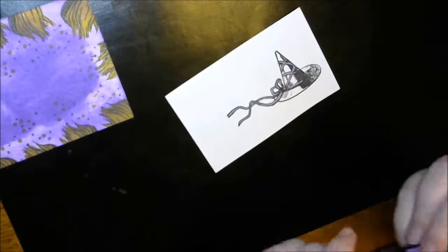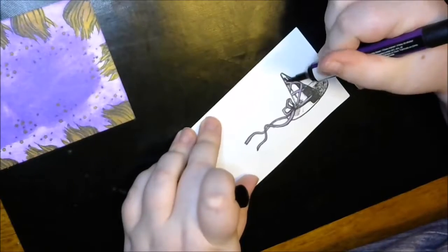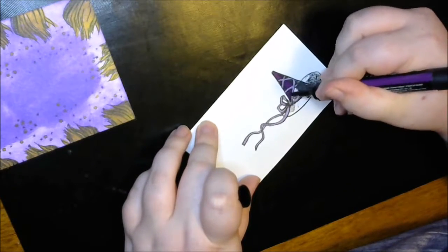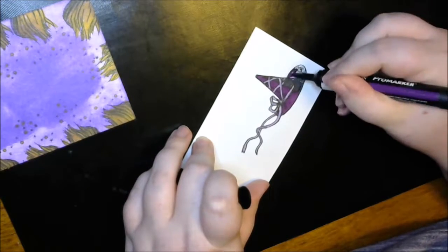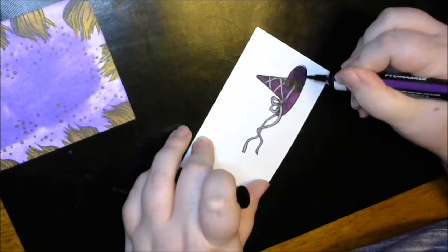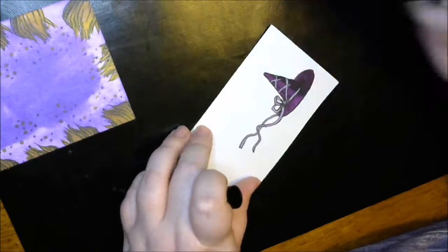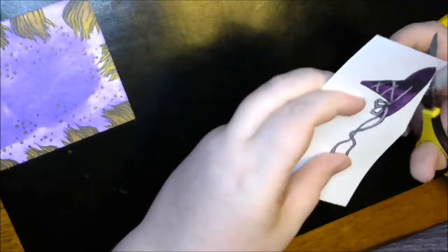Now for the witch's hat, I'm coloring it with plum and amethyst. I did the dark parts with the plum so it looks like shadow, more like a black hat with a little bit of purple seeping through.